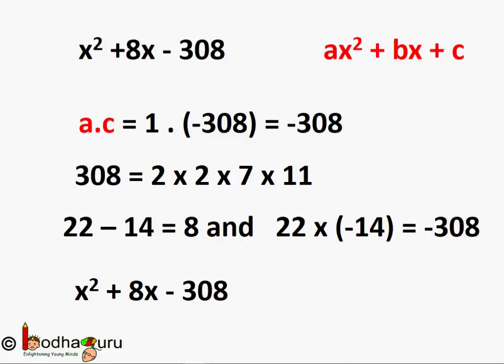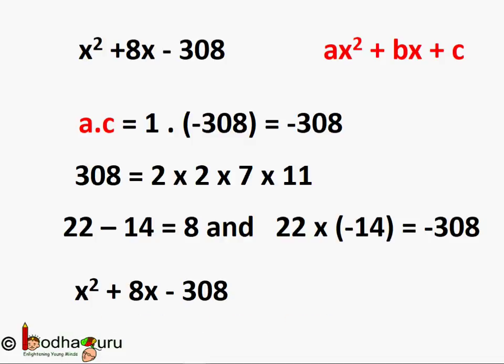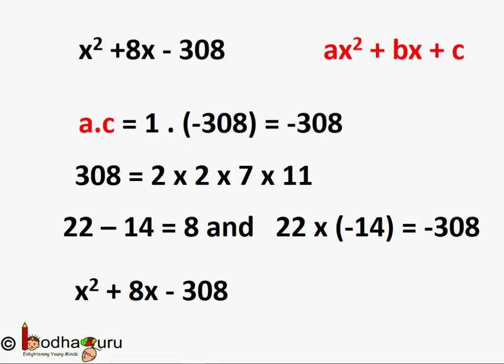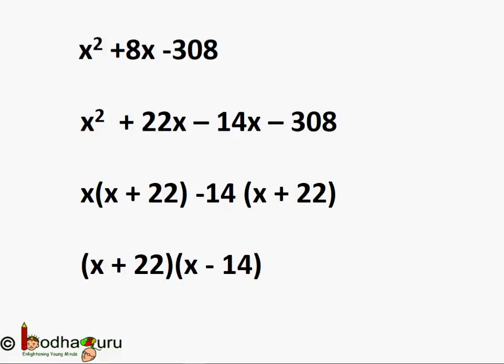So if a × c is a big number, we do prime factorization and find two combinations whose sum equals b and whose product equals a × c. So x² + 8x − 308 = x² + 22x − 14x − 308.